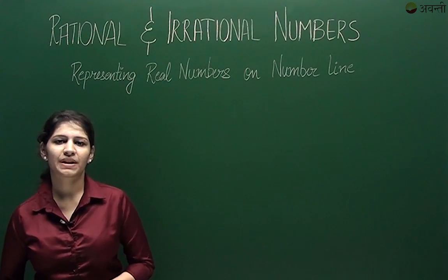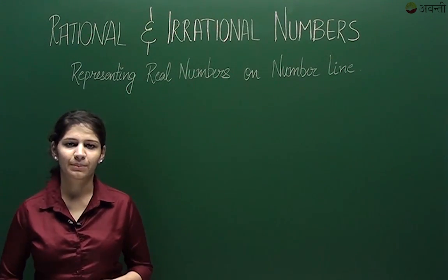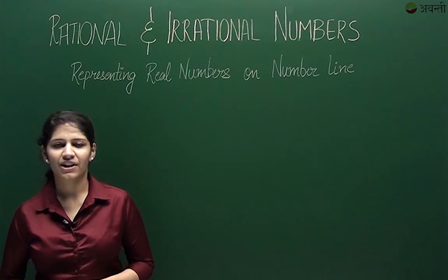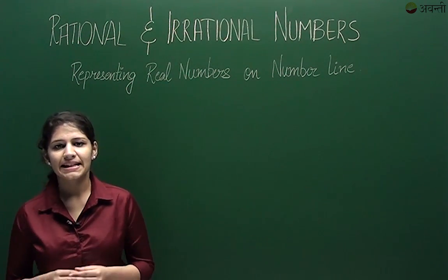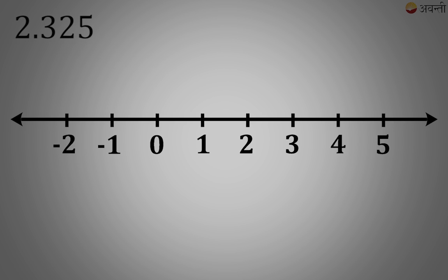In this video we will try to represent real numbers on number line when their decimal expansion is given. Let's say I have a number 2.325. Where would this number lie on the number line?